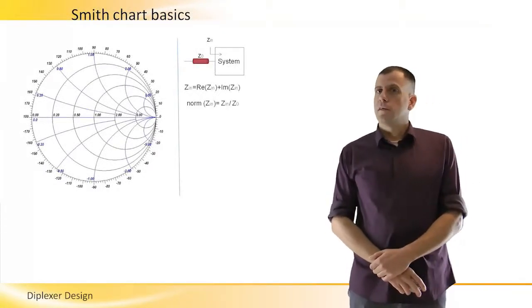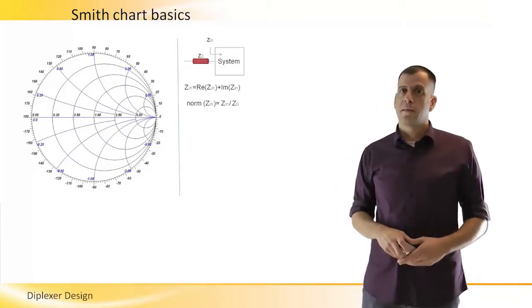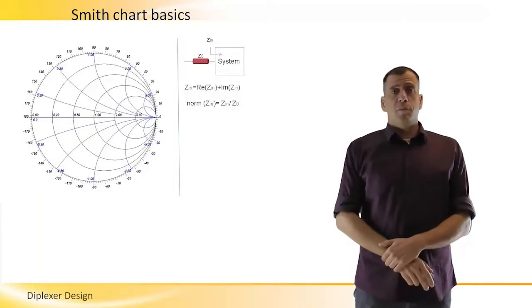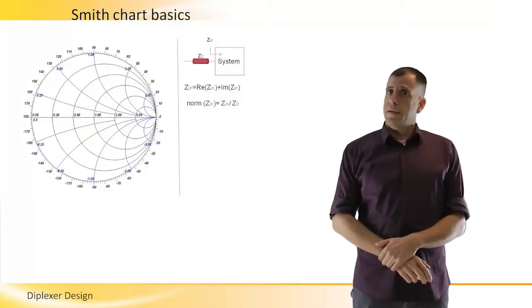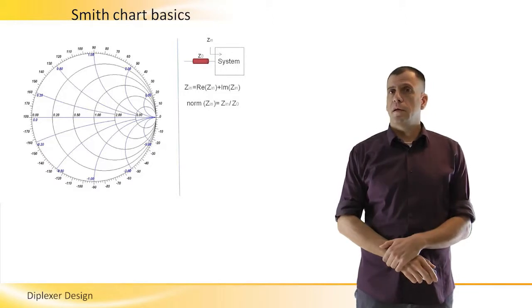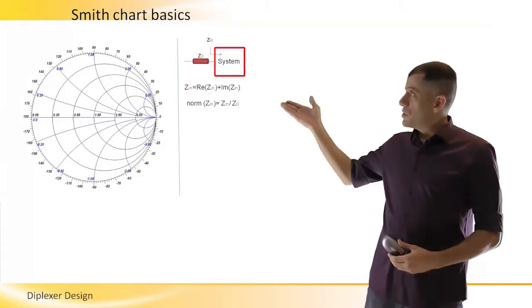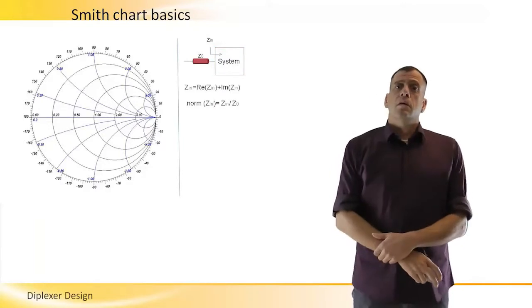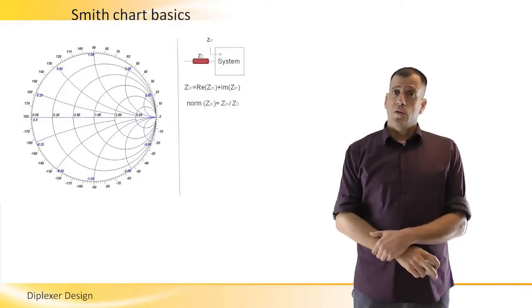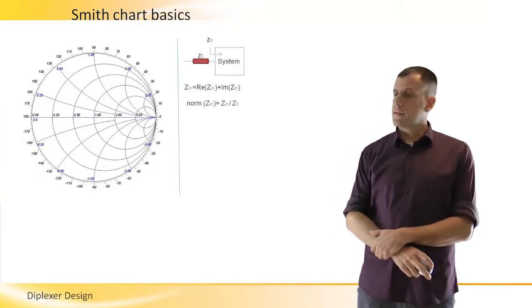Let's start by looking at a system connected to a transmission line with impedance ZO, like here in this image. It could be a common 50 ohm line or any other impedance like 75 ohm or around 300 ohm, which is in the waveguide case. When looking into the system from the side of the transmission line, we will generally measure a complex impedance with a real and imaginary part. When we use a Smith chart, we first have to normalize this impedance by dividing both the real and imaginary parts by ZO.